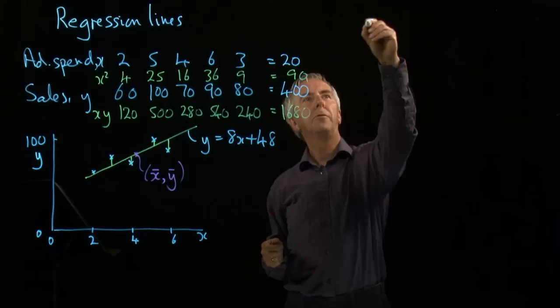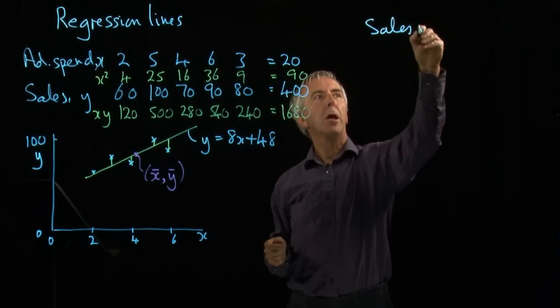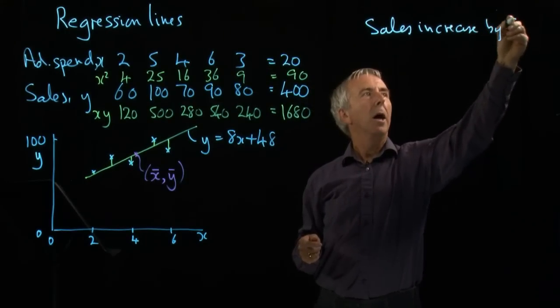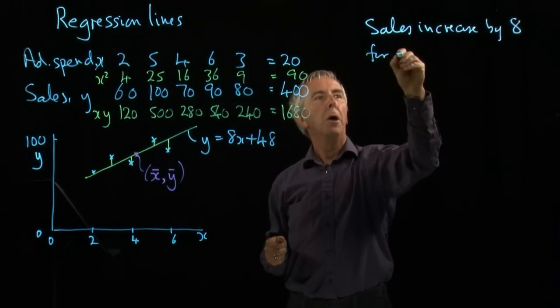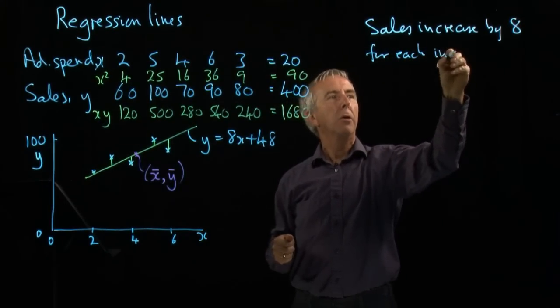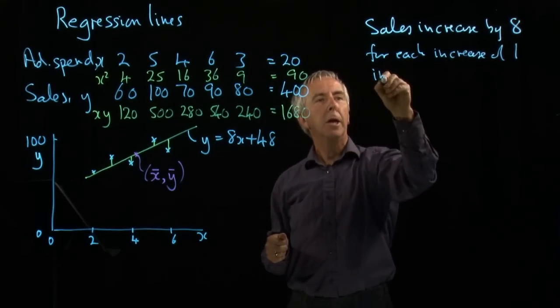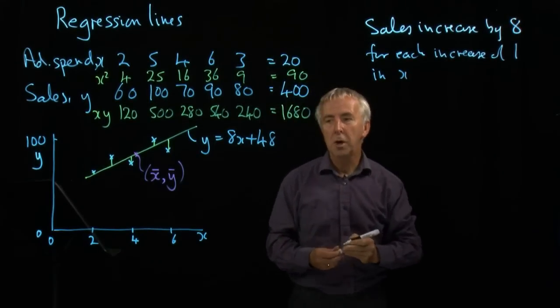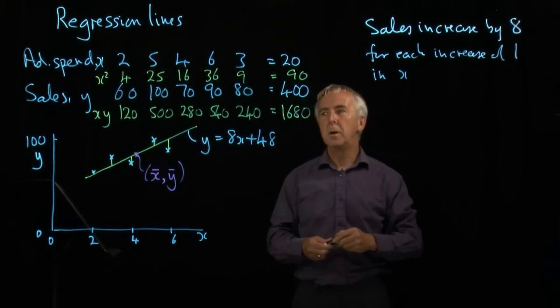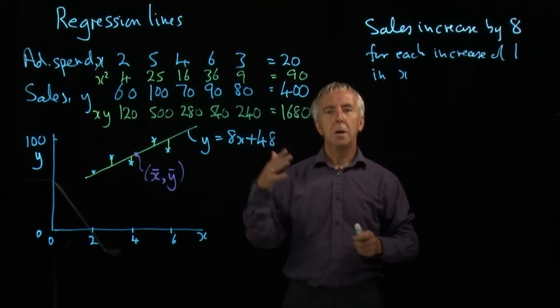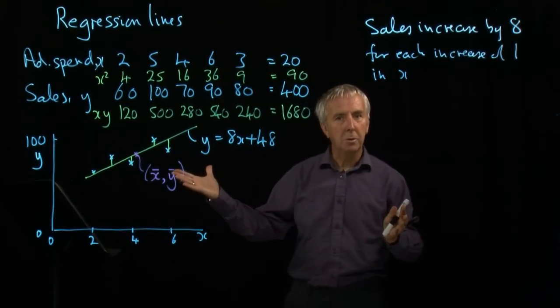So this tells us that the sales increase by 8 for each increase of 1 in x. So that's useful to know, and that's sensible. If I'm spending an extra £1,000 on advertising, and I get £8,000 extra sales, that's good.